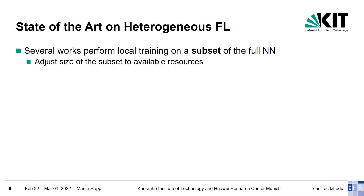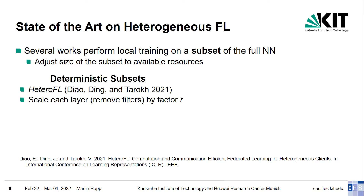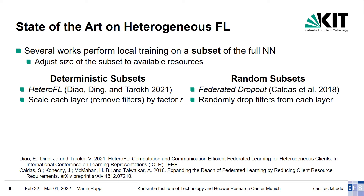An often seen pattern to tackle heterogeneous computational resource availability in federated learning is to let weak devices train only a subset of the full neural network, reducing computations. The size of the subset is selected according to the available resources on the device. The subset can either be selected deterministically or randomly. A state-of-the-art technique in the first category is HeteroFL, which scales layers by a factor of r. In the case of convolutional layers, this means removing a number of filters from each layer before sending it to the devices for local training — the filters are always removed from the end, in order. In contrast, Federated Dropout randomly selects filters to drop from each layer before sending only the remaining filters to the devices.